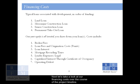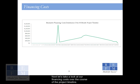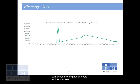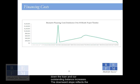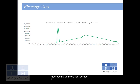Next, let's take a look at our financing costs over the course of the project timeline. The spike in month 19 is a reflection of closing on the construction loan and comprises the origination costs and lender fees. The upward slope is the capitalized interest, which continually increases as we draw down the loan and our outstanding balance increases. The downward slope reflects the fact that we are signing tenants and more rent is coming in, and thus our operating deficit is decreasing as more rent comes in. Finally, our financing costs end up as zero after we repay the construction loan in full.